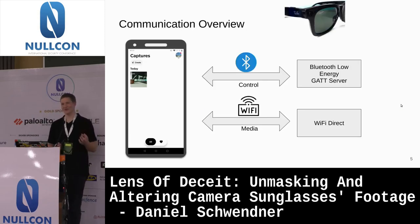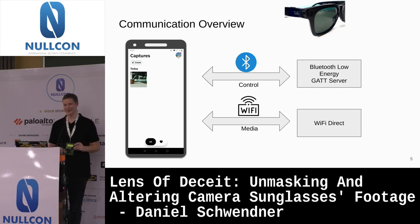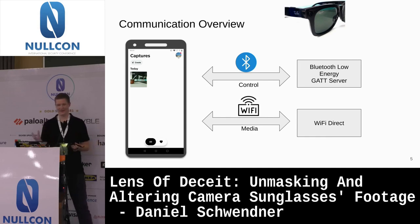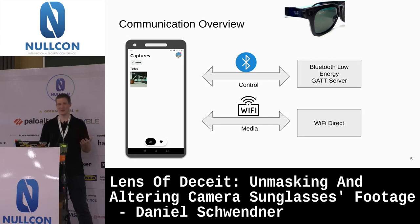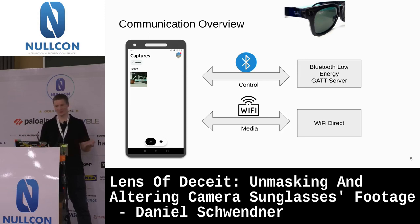For us hackers, it's most important to reverse engineer the communication and learn how the sunglasses are actually communicating with your phone. There are two different types of communication. For most basic stuff, these sunglasses use Bluetooth Low Energy — they run a GATT server, which is common for IoT devices because it doesn't need much energy. The GATT server has characteristics where you can write, read, and get notified on changes — for example, changing volume or video recording settings.